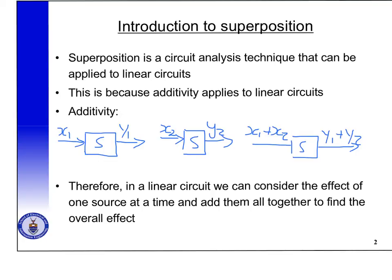Then additivity means that if we put X1 plus X2 into the system then we are going to get out Y1 plus Y2. That is additivity. And additivity means that in a linear circuit we can consider the effect of one source at a time, excluding all the other sources. If we work out the effect of each source individually then in the end we can find the overall effect of all the sources by just adding them together.